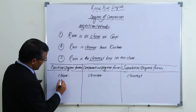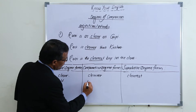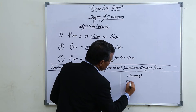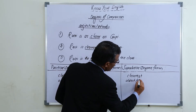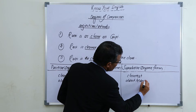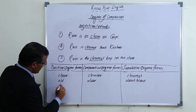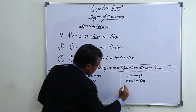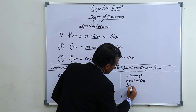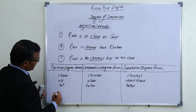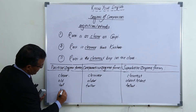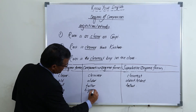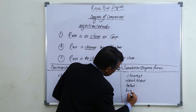For example: 'old — older — oldest' (or eldest); 'tall — taller — tallest'; 'big — bigger — biggest.'